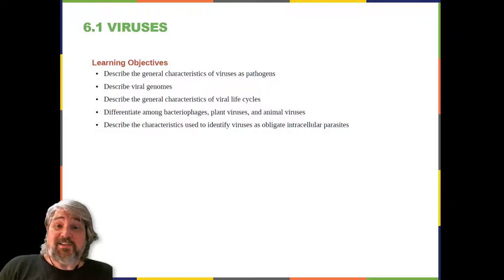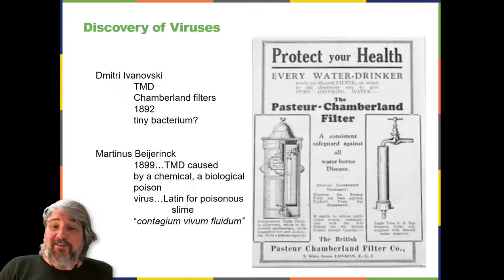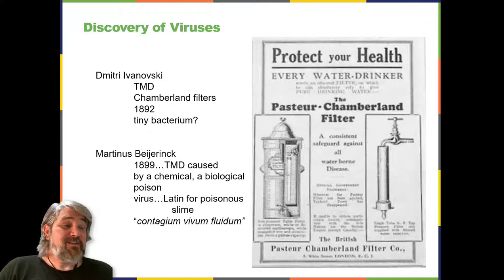Despite their small size, which prevented them from being seen with light microscopes, the discovery of a filterable component smaller than a bacterium that causes tobacco mosaic disease, TMD, dates back to 1892. At that time, Dmitry Ivanovsky, a Russian botanist, discovered this source of TMD by using a porcelain filtering device, first invented by Charles Chamberlain and Louis Pasteur in Paris in 1884.